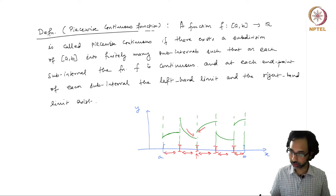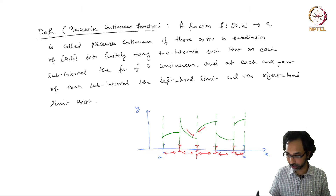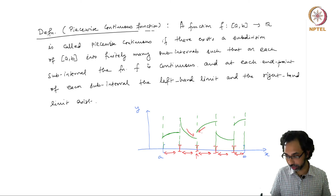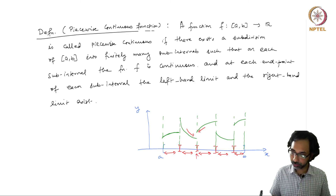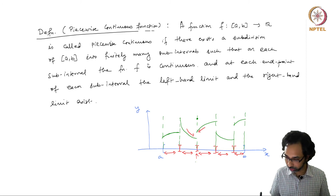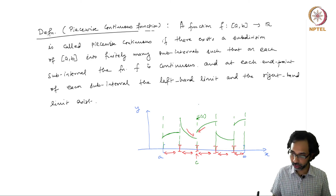In the case of a continuous function, the left and right-hand side limits were equal, and also equal to the value of the function at that point. But here they may not be equal — the right-hand limits may not be equal, and they may not be equal to the value of the function at this point. So if this point is c, f(c) can differ from both the left limit and the right limit, and all three can be different.